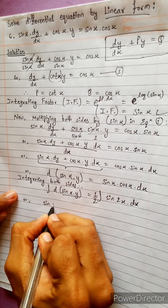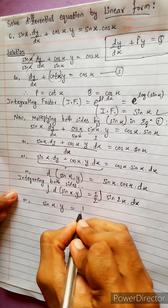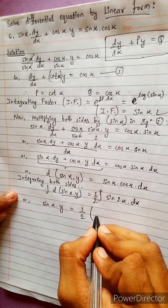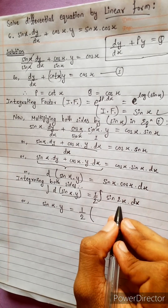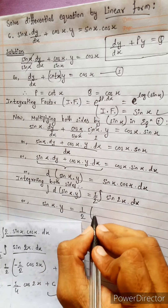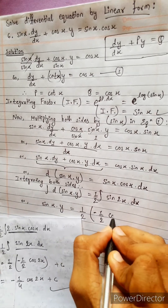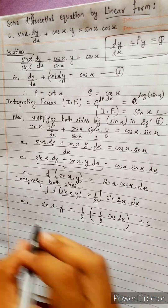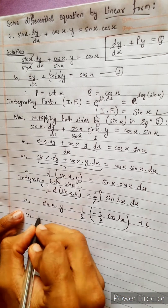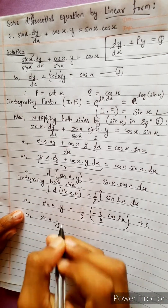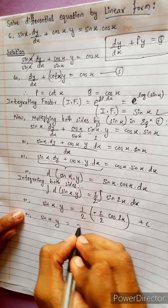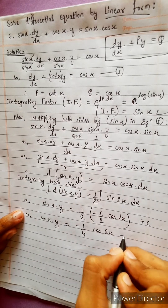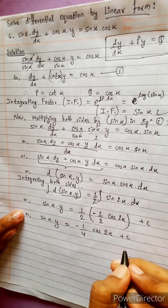y equals to 1 by 2. This integration gives: minus (1/4)·cos 2x plus c. So sin x into y equals minus (1/4)·cos 2x plus c.